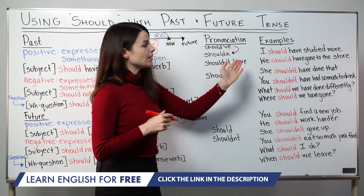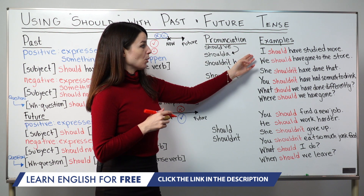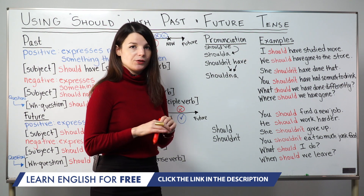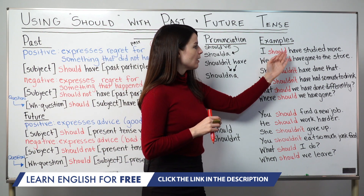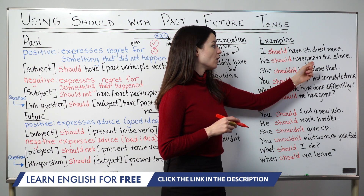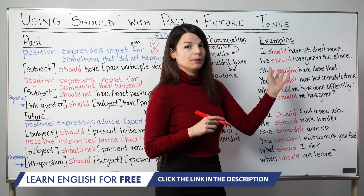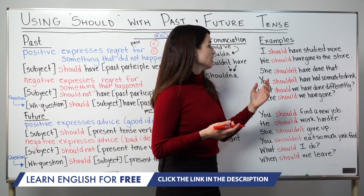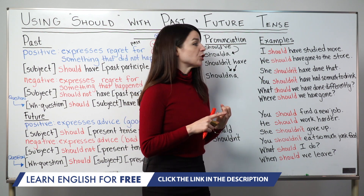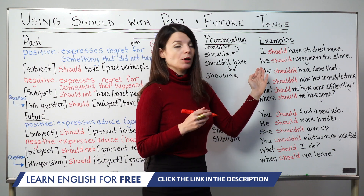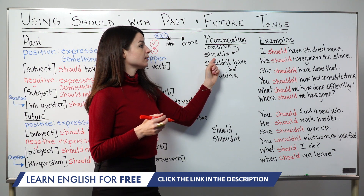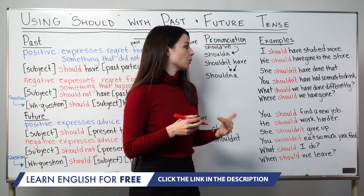Let's look at two positive statements. First: I should have studied more. And: We should have gone to the store. Here, should is followed by have and then the past participle — studied and gone. These statements express regret. When speaking quickly, we'd say I should've studied more and We should've gone to the store. That shoulda pronunciation is the most natural one.